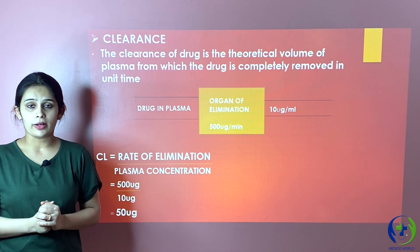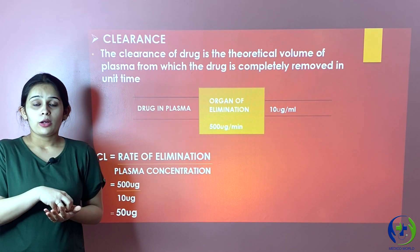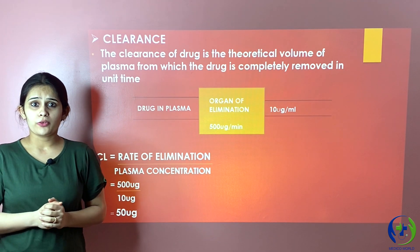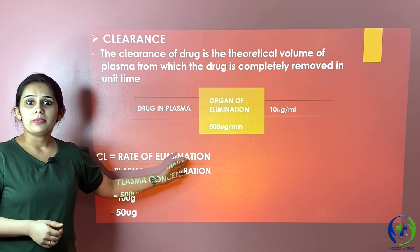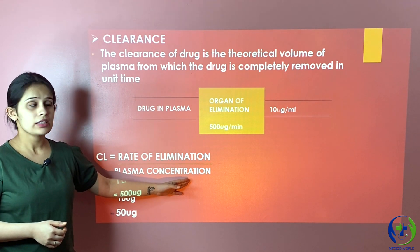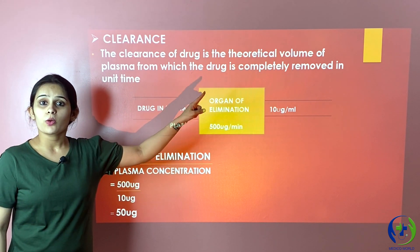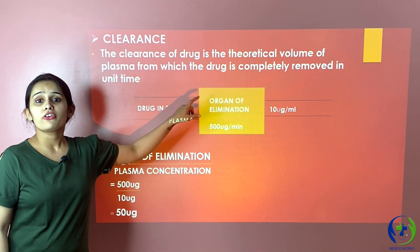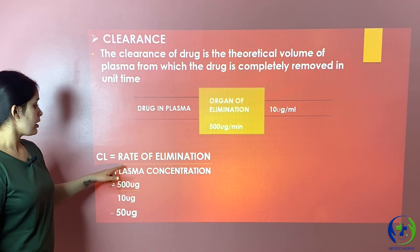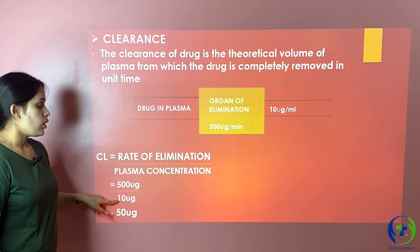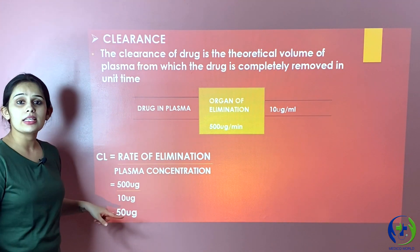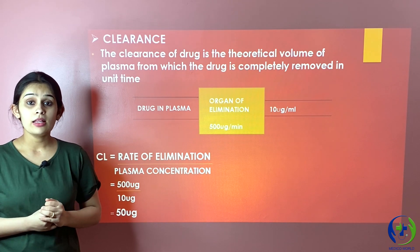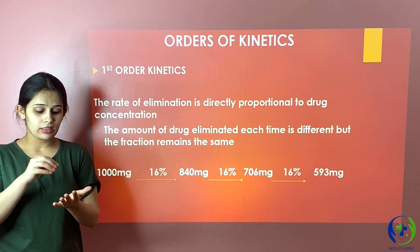The next concept is the clearance rate of a drug — it is the quantity of drug removed or excreted from a given volume of plasma. The formula is: clearance rate equals rate of elimination divided by plasma concentration. For example, if the concentration of a drug in plasma is 10 micrograms per ml, and it is eliminated at a rate of 500 micrograms per minute, then the clearance rate is 50 ml per minute.